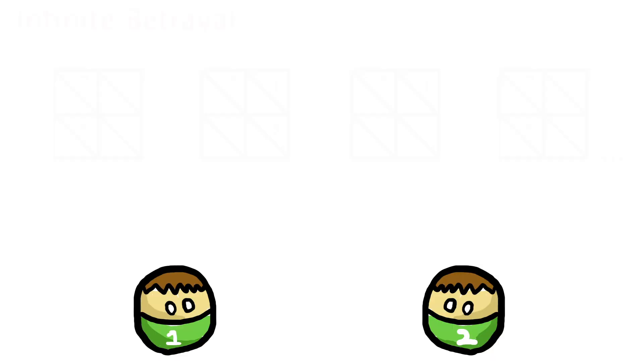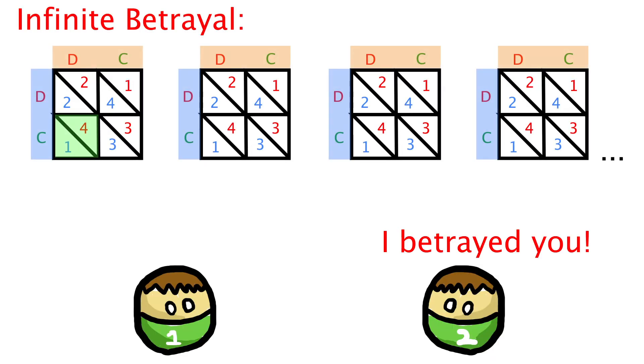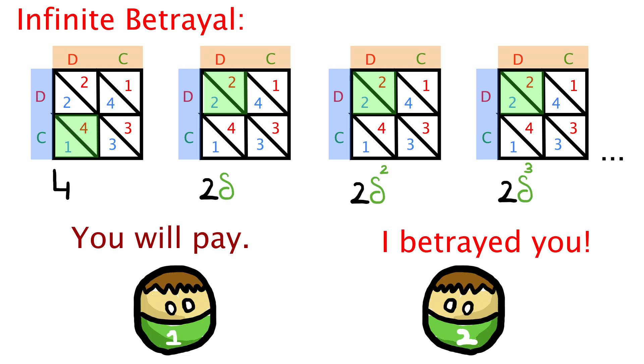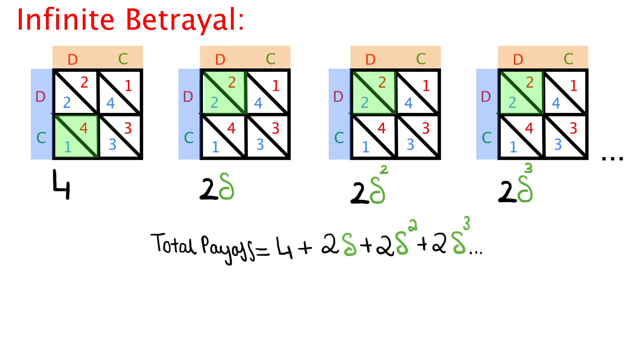Now, if player 2 decides to betray player 1, who cooperates, he would earn 4 coins. But player 1 would obviously get upset and trigger the betrayal strategy forever. And thus, player 2 would earn 2 coins in each subsequent round. So his total payoff for infinite betrayal would be 4 in the initial game, plus 2 delta, plus 2 delta squared, and so on. Once again, we can convert this to simpler terms with the formula we know.